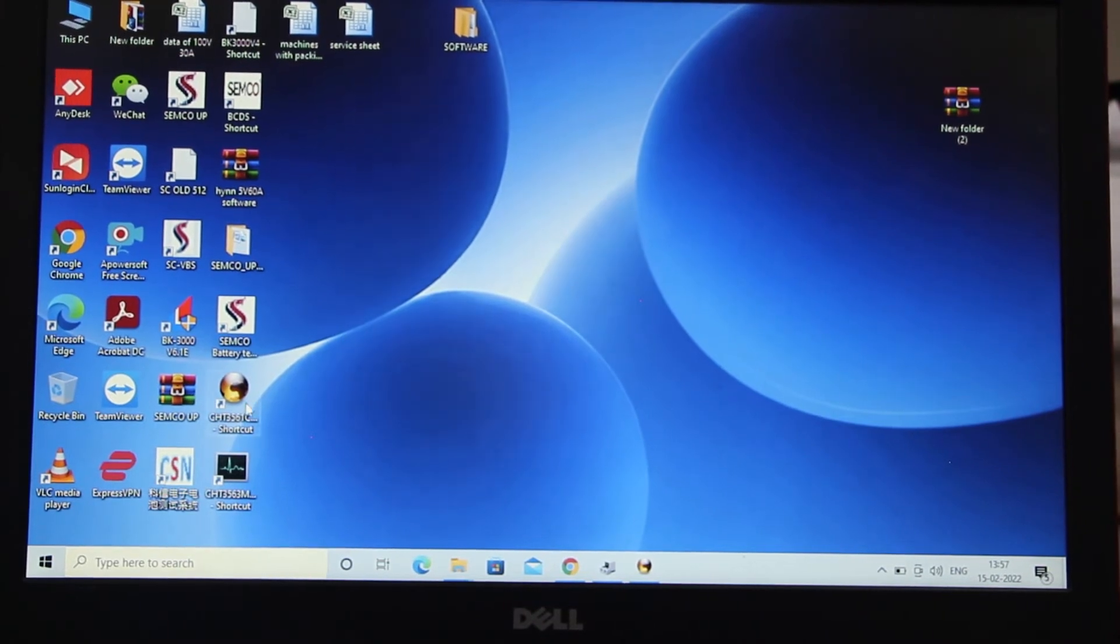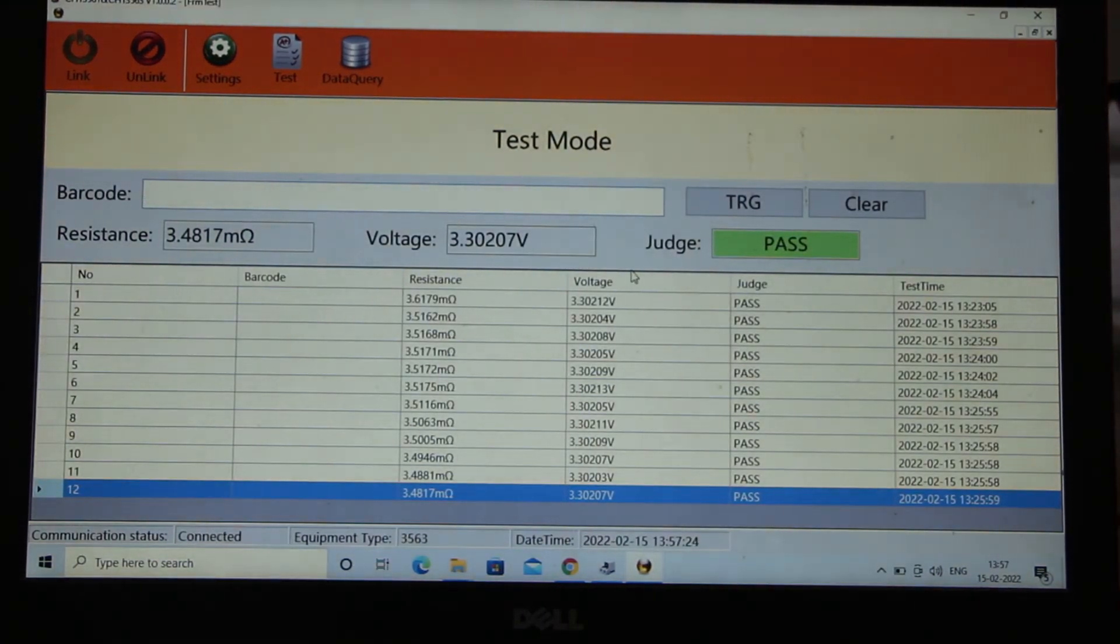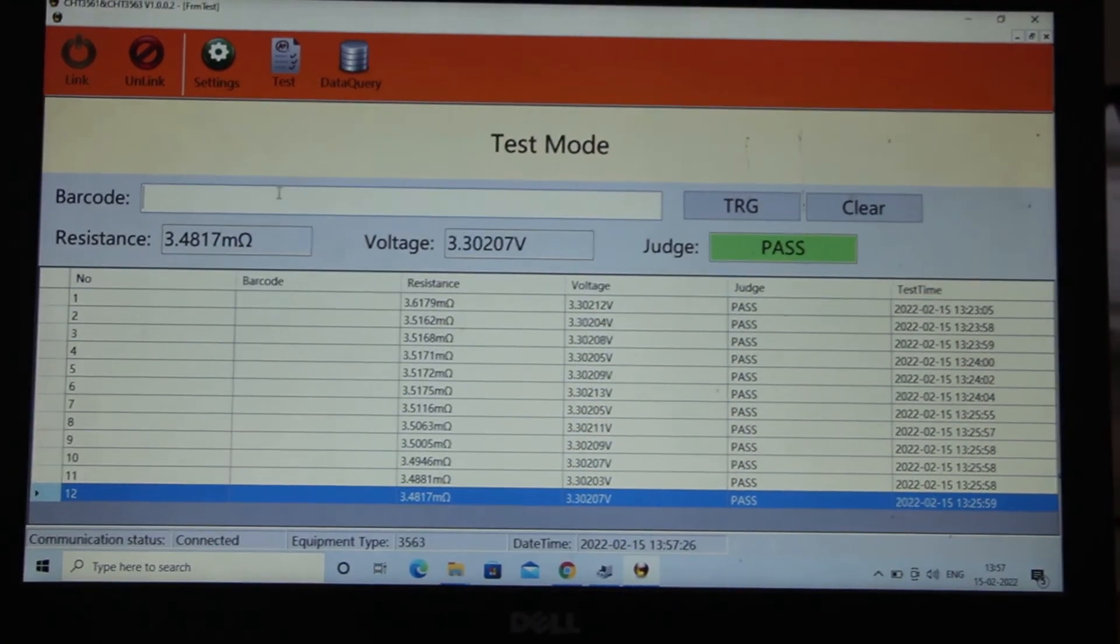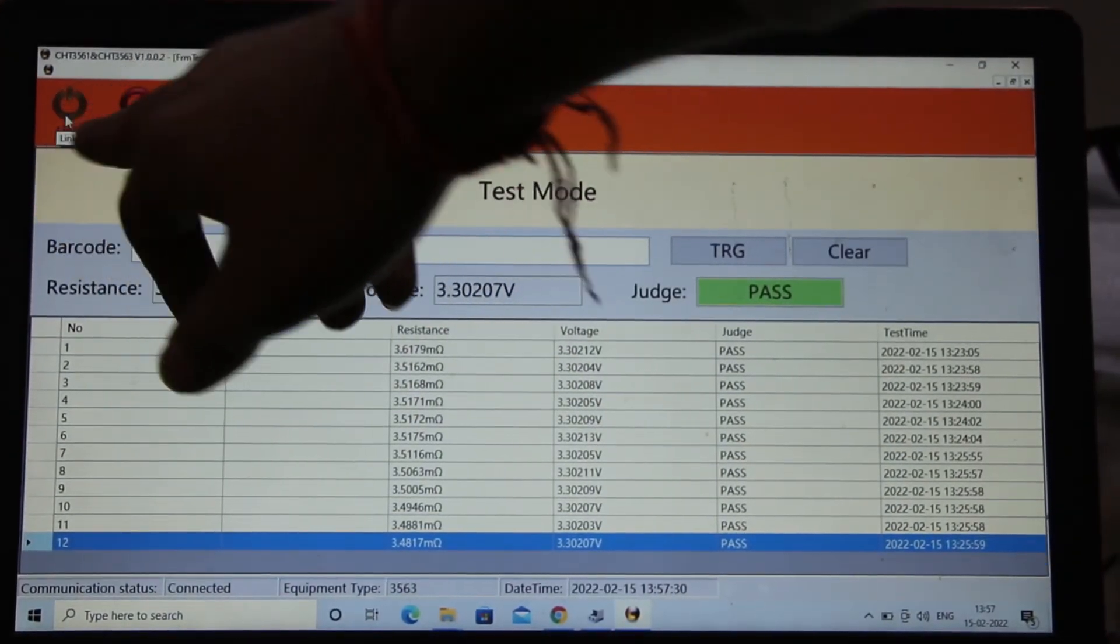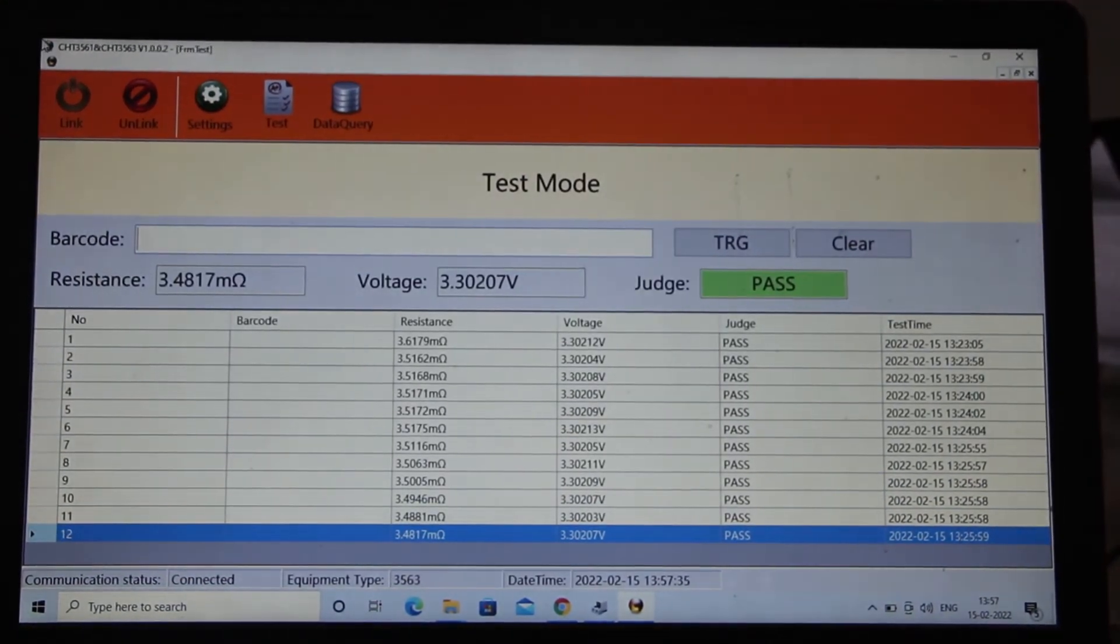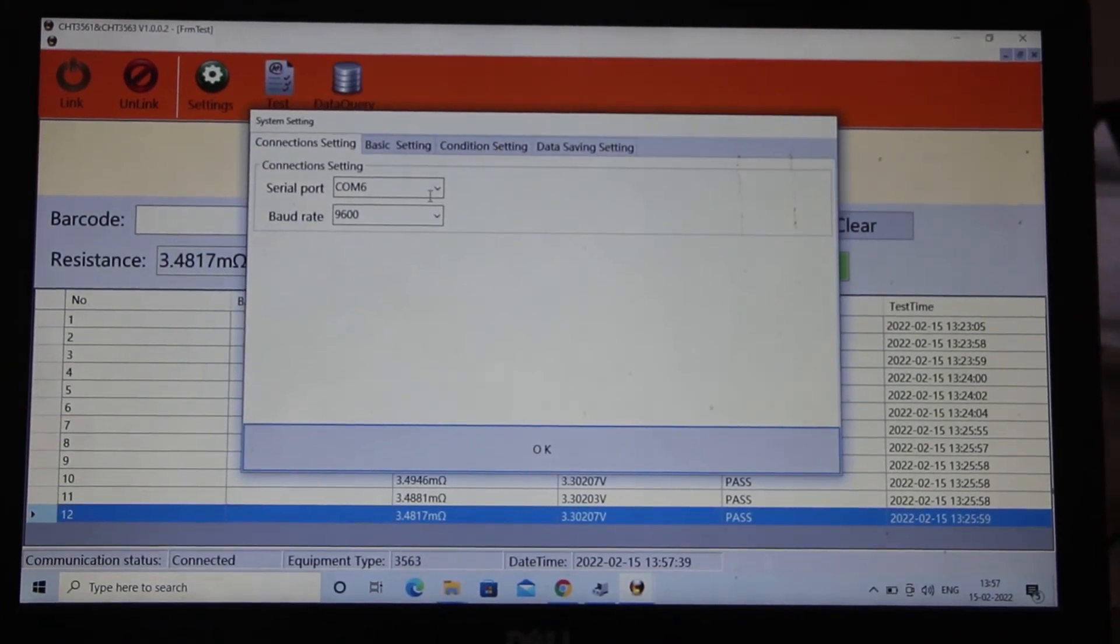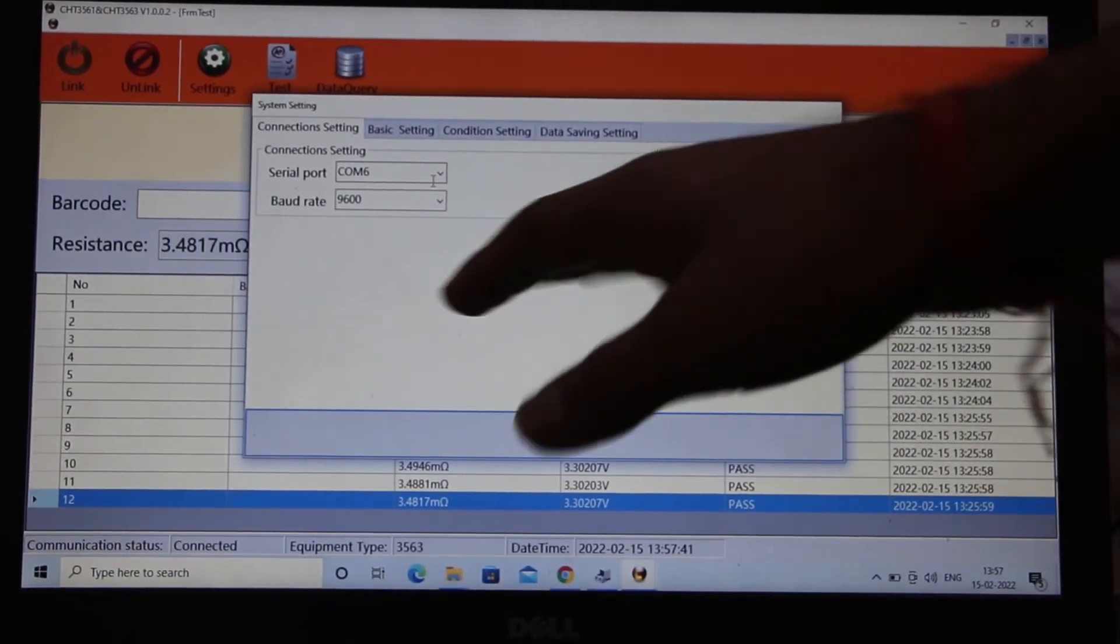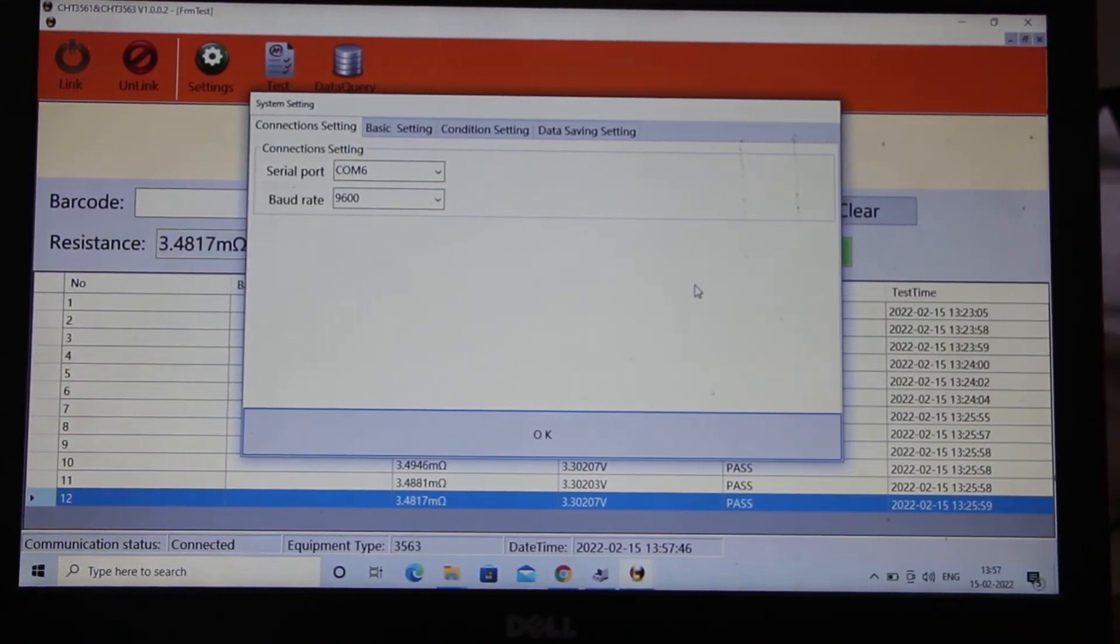This is a 3561 software I am going to open it right now. There you can see the software is like there is a link button at the left corner link means you are trying to communicate with your machine setting means you can set your different type of com like according to your band and date and your com like whether you are using com 5, com 6 you can check it on your device management setting.